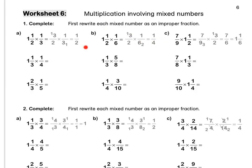Press pause to complete question B. For C, we have seven ninths times — we rewrite our mixed number as an improper fraction. Then we first simplify in our question by dividing top and bottom by 3, leaving 1 and 3. Then we multiply out to get seven sixths, which is 1 and one sixth as a mixed number.